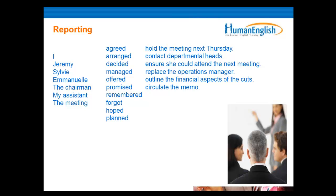For example, if we take 'I agreed... hold the meeting next Thursday' — what is the preposition that needs to come after 'agreed'? After the verb, you need to use a preposition to connect it. The preposition that we need is 'to.' So for example, we can say: 'I agreed to hold the meeting next Thursday.' Or: 'The chairman promised to circulate the memo.'